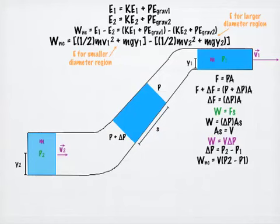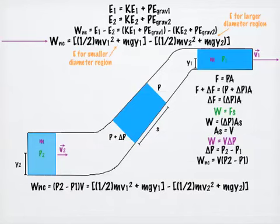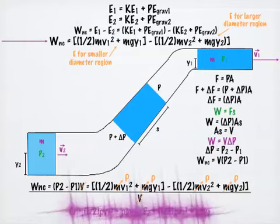Plugging this expression for work done by non-conservative forces into our work energy theorem gives us this expression. If we divide this expression by the volume V, we can eliminate this term and substitute the density rho in for the mass over volume terms. When we do this and rearrange terms, we get the expression that we call Bernoulli's equation.